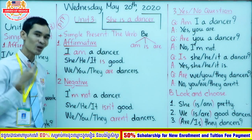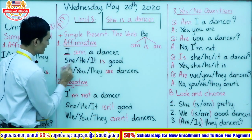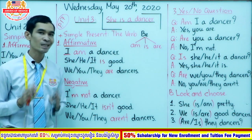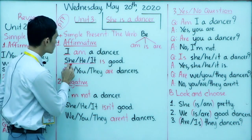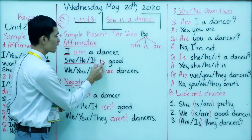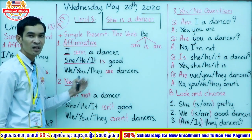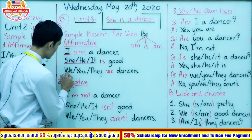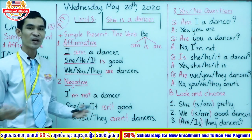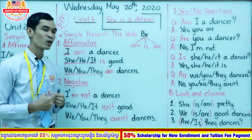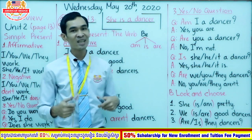You cannot say 'I is' or 'I are' — you must say 'I am'. For example: 'I am a dancer', 'I am a teacher', 'I am a student'. For 'is', it is used with she, he, and it — for example, 'She is good', 'He is good', 'It is good'. For 'are', it is used with we, you, and they — for example, 'We are dancers', 'You are dancers', 'They are dancers.'